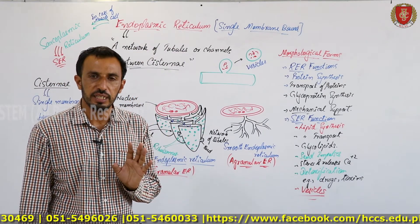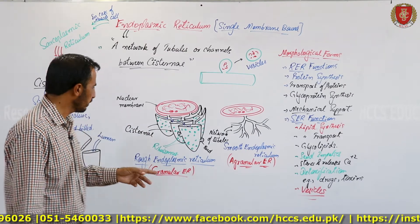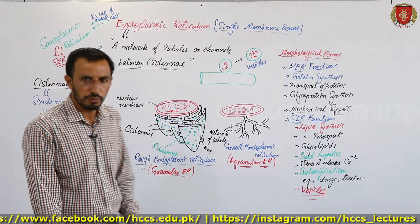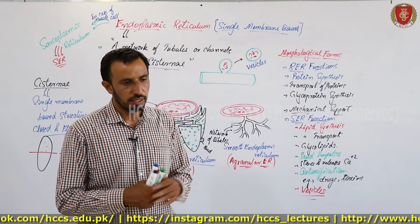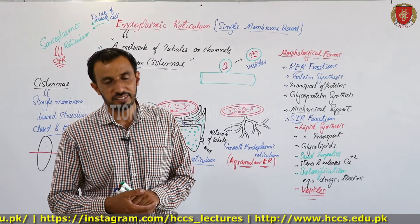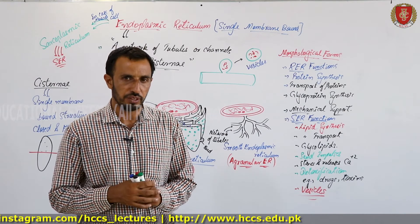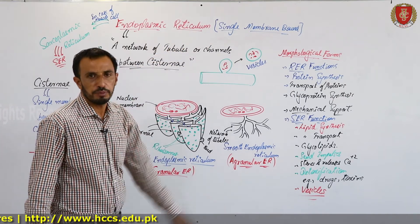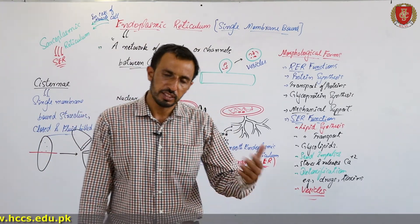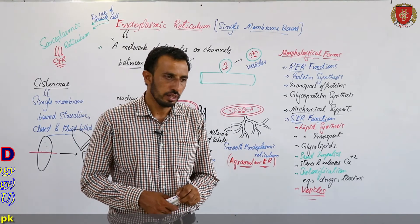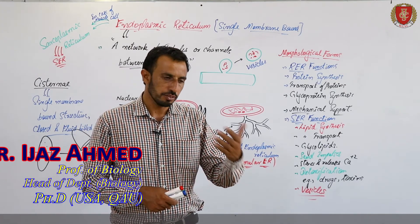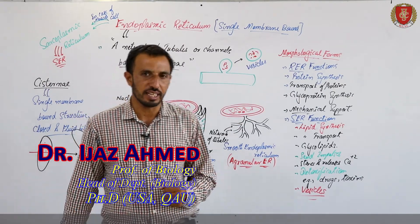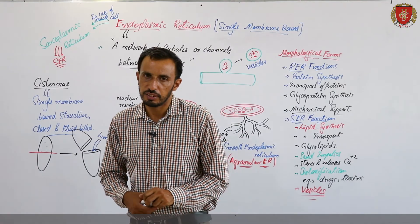Since endoplasmic reticulum is membrane-bound, it is found only in eukaryotic cells — not prokaryotic. The ribosomes on rough ER are 80S ribosomes — larger in size with a higher sedimentation rate — which are characteristic of eukaryotic cells. This is a very important organelle found in all eukaryotic cells. In the next session we will cover ribosomes and then Golgi bodies. Thank you very much, Allah Hafiz.